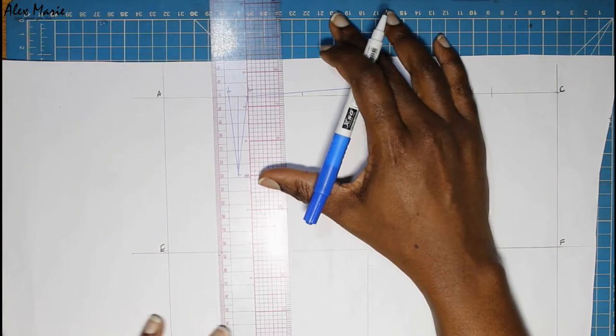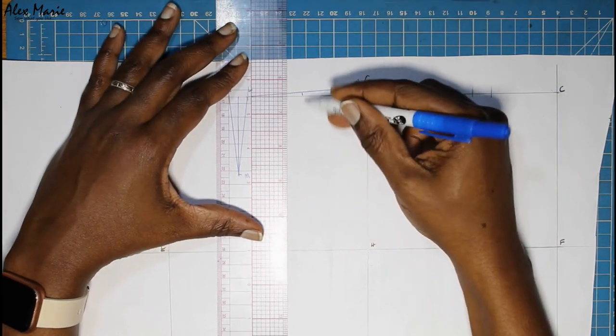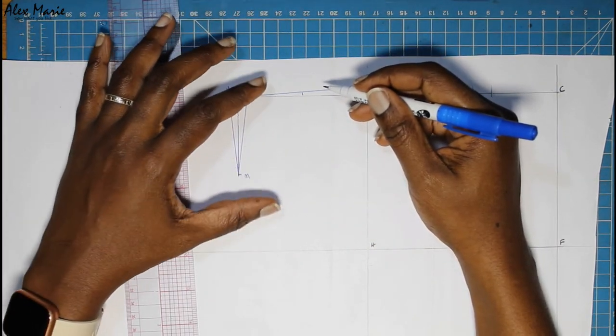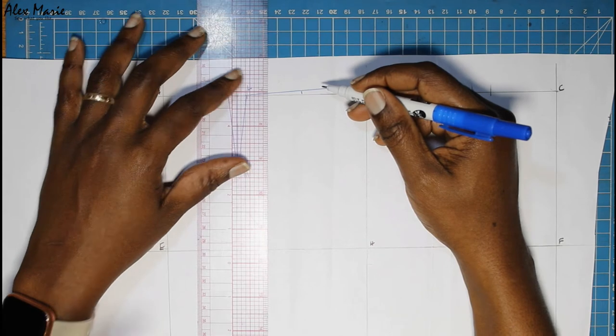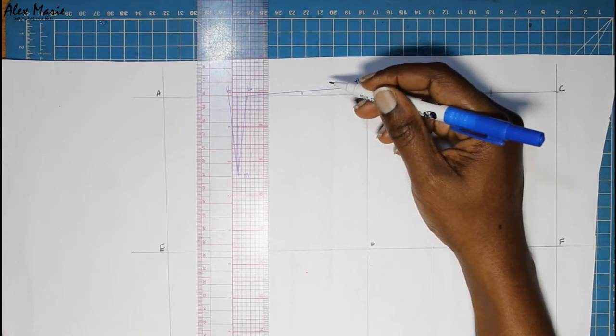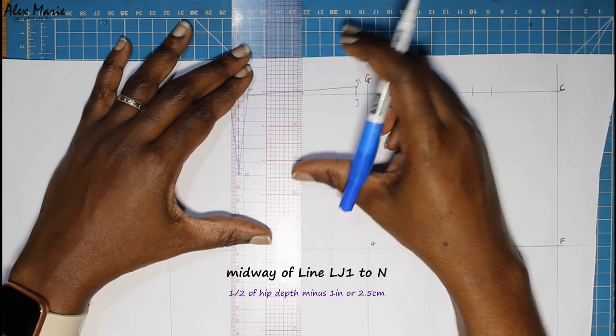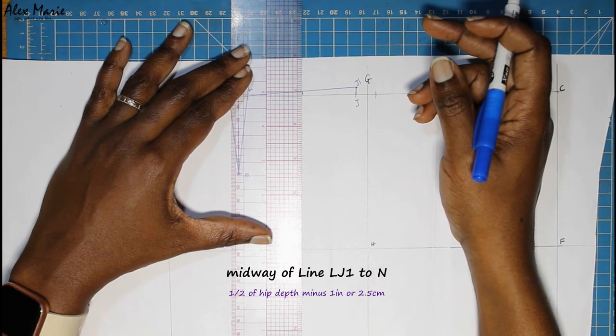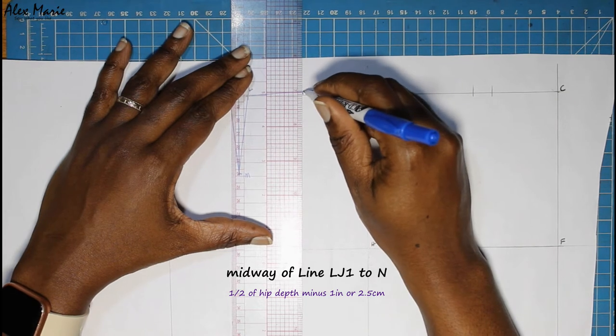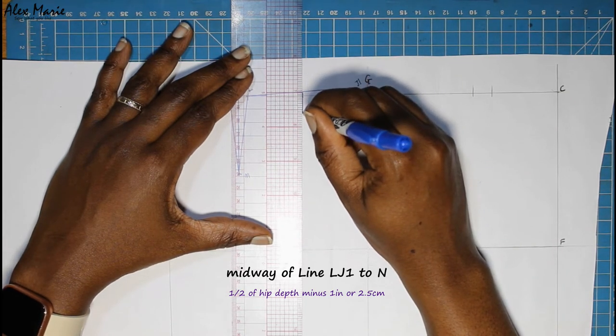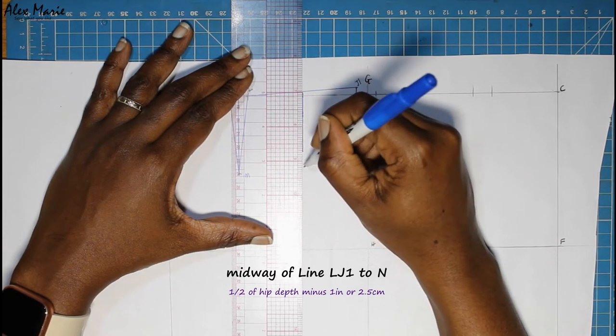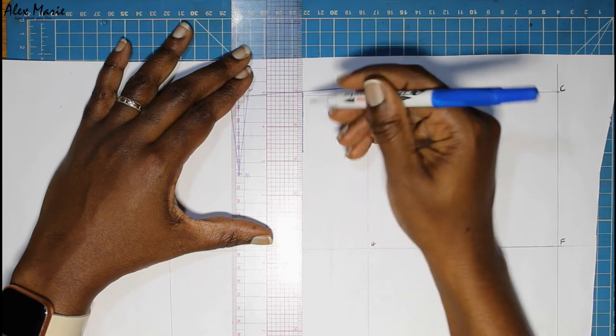Square down from this point. Basically you want this dart to be shorter than the first dart. It could be half an inch shorter, it could be an inch shorter. I made mine an inch shorter. And you're going to put in your dart legs.